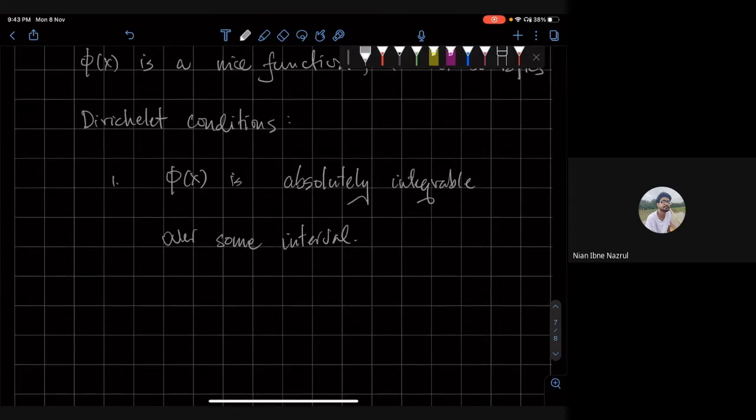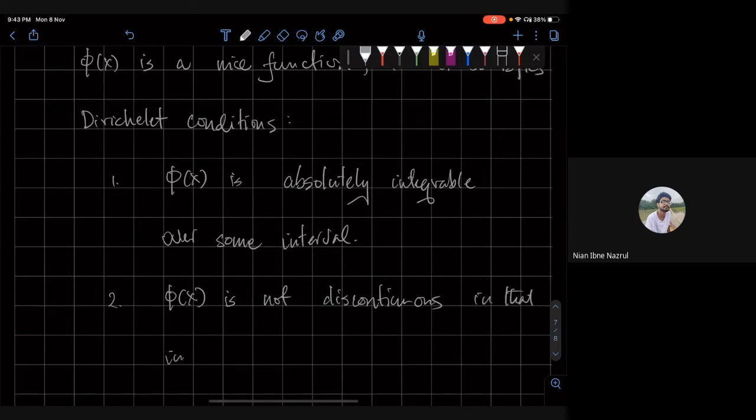That means its absolute value is finite. If you integrate its absolute value you get a finite number. Number two is that phi of x is not discontinuous in that interval at an infinite number of points.